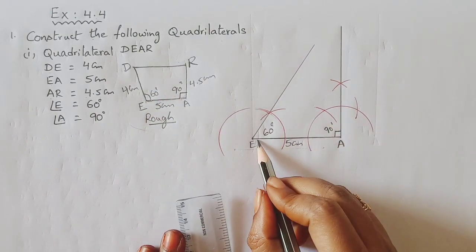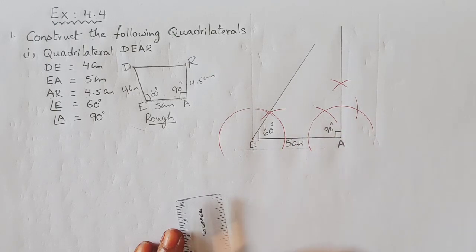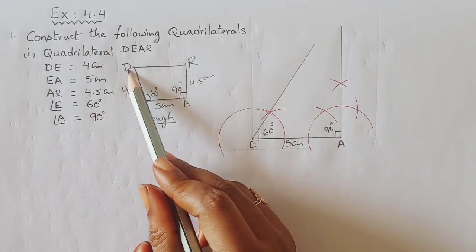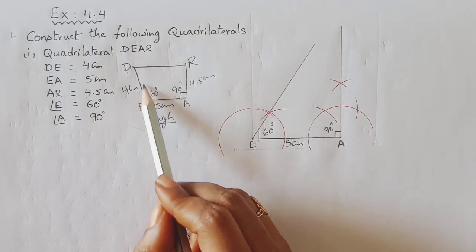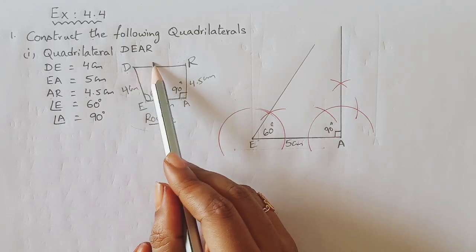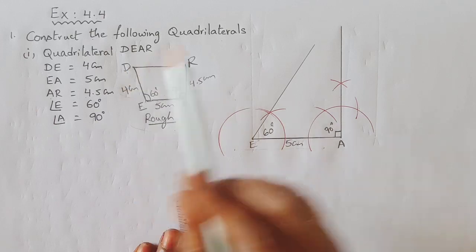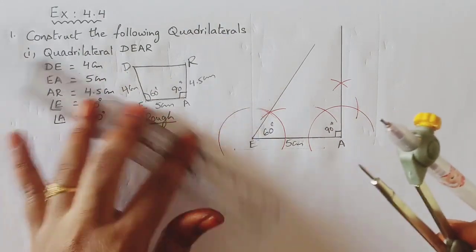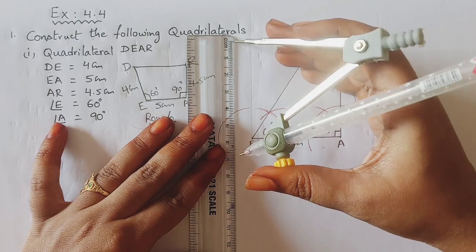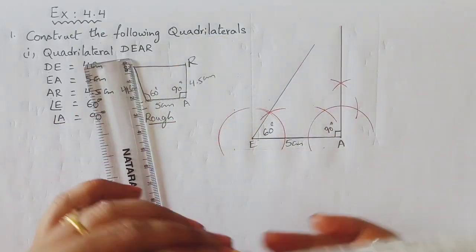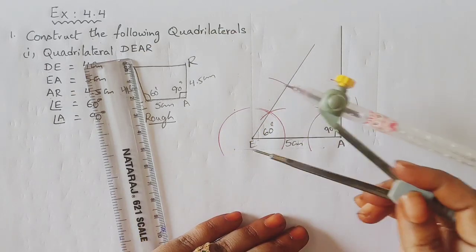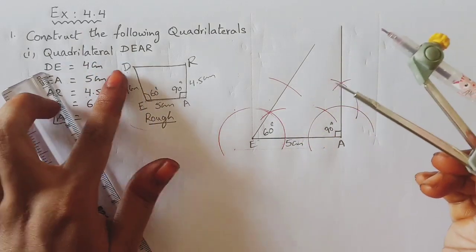Now we have 60 degrees angle at E and 90 degrees angle at A constructed. Next we need point D and point R. From E, DE is 4 cm — so take a 4 cm radius on the compass. From E, draw an arc of 4 cm radius along the angle line. The arc cuts the line at point D.